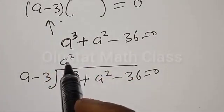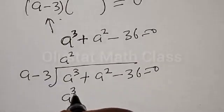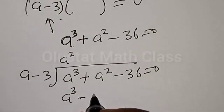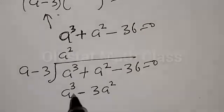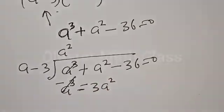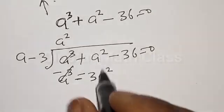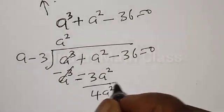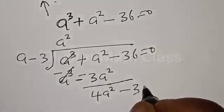Now, a squared times a gives a raised to power 3. Then a squared times minus 3 gives minus 3a squared. Multiplying by negative, this cancels. We have 3a squared plus a squared, that will be 4a squared. Then here we have 4a squared, and 36 comes down, giving us 4a squared minus 36.